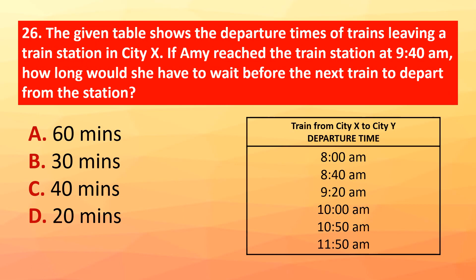Question 26: The given table shows departure times of trains leaving a station in city X. If Amy reached the train station at 9:40 AM, how long would she have to wait before the next train departs? The correct answer is option D: 20 minutes.